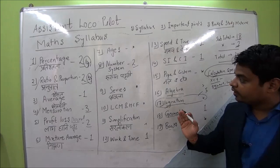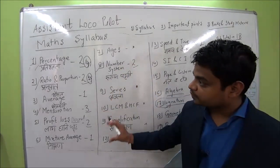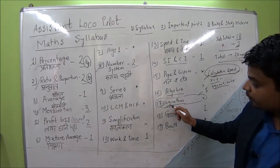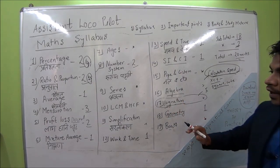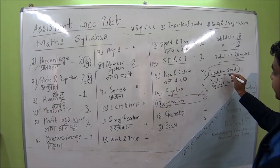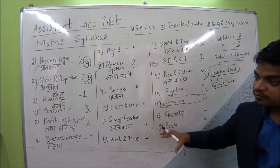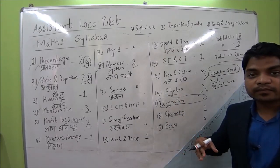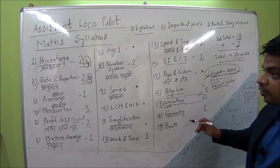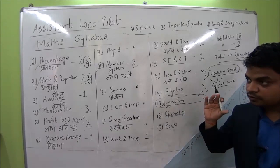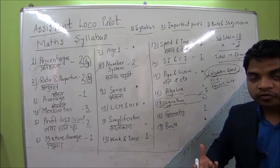So the third point is calculation speed. To summarize: first, I told you the most important topics. Second, there is logarithm — a small topic, but if you prepare it, those marks are secured. You should not spend all 90 minutes entirely on math. That is why you need to improve your calculation speed, and for that, the necessary video lectures are available — watch them carefully, and incorporate those techniques into your math practice.